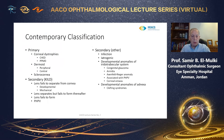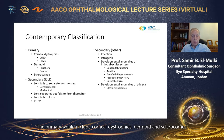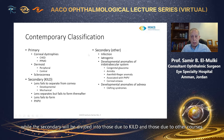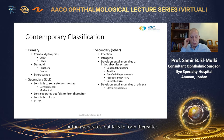The contemporary classification includes classifying CCO into primary and secondary. The primary would include corneal dystrophies, dermoids, and sclerocornea, while the secondary category is divided into those due to keratoiridolenticular dysgenesis and those due to other causes. In the KID category, the lens may either fail to separate from the cornea — either developmental or mechanical — or the lens separates but fails to form thereafter, or the lens fails to form initially.